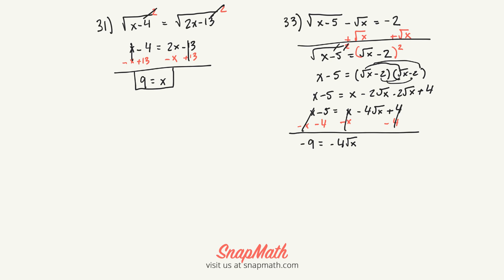Next step, we're going to square both sides again. That will give us 81 on this side, and then it will give us 16x. Then we're going to divide by 16 on each side, and we get 81 over 16.